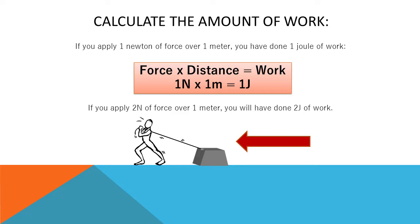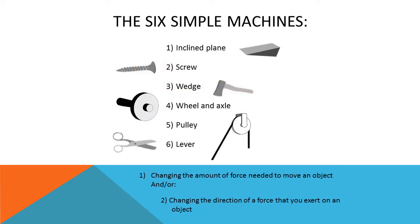If you apply two newtons of force over one meter, you will have done two joules of work. Now I know what you're thinking. All this work is exhausting. If only there were a machine that could help make this work easier. Great news. There are actually six machines that can help you do work. They are called simple machines.